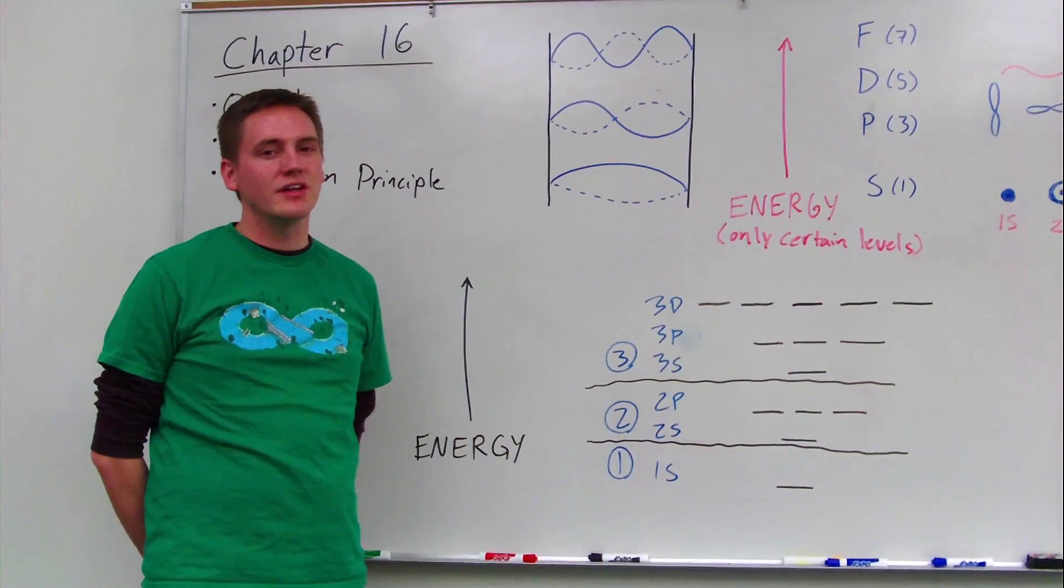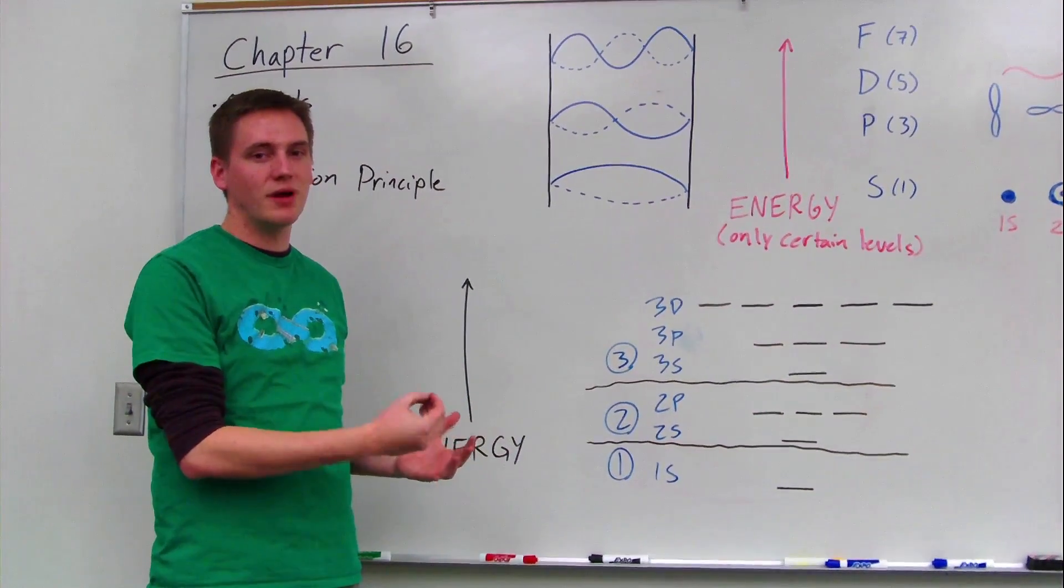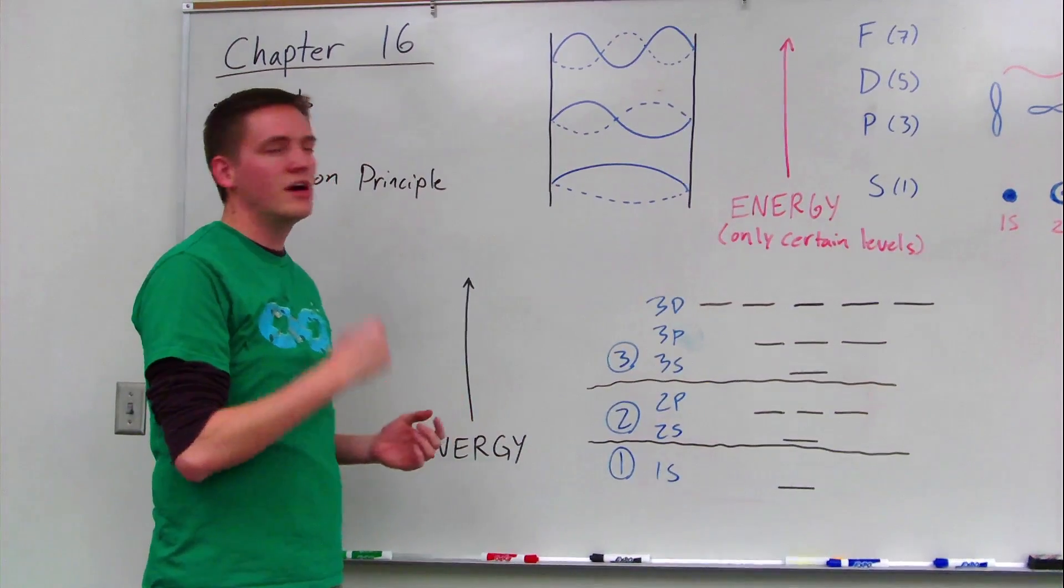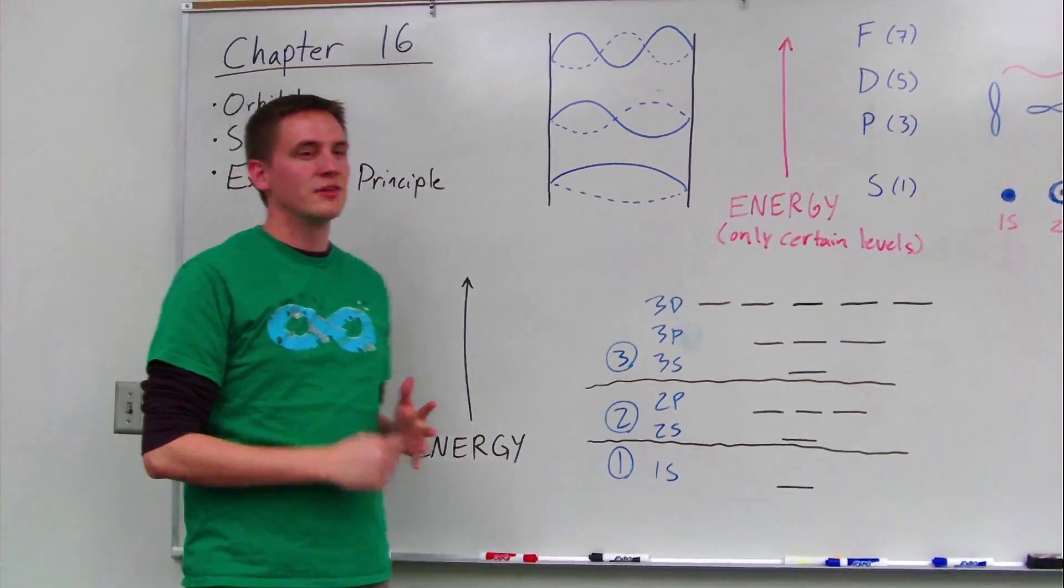This model incorporates what we learned in Chapter 15 about matter having properties of waves. So the electrons now are not just particles going around the nucleus, but they have properties of waves as well.